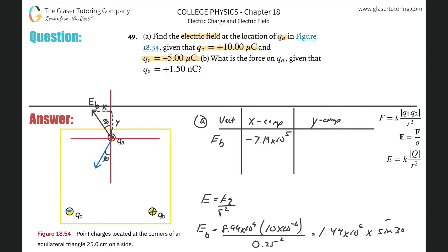The y-component uses cosine of 30° since it's the adjacent side. Take the magnitude 1.44 × 10⁶ and multiply by cos(30°). The vector points upward so this is positive, giving approximately +1.25 × 10⁶ N/C. That completes E_b's components.